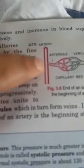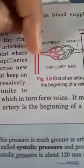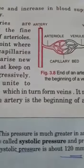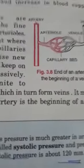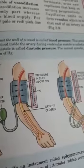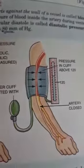Here you can see the diagram — this is an artery and this is a vein. Arteries are connected to veins by means of capillaries. These capillaries are the connection between both of them.